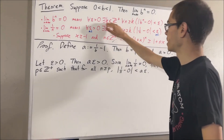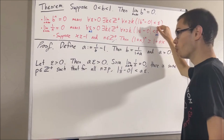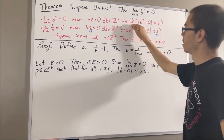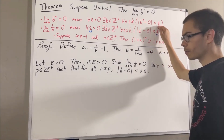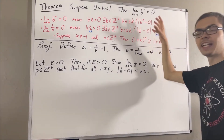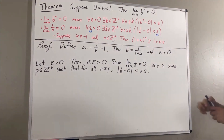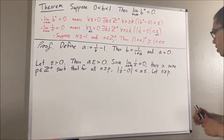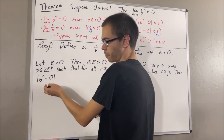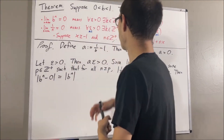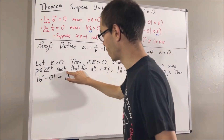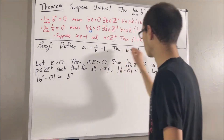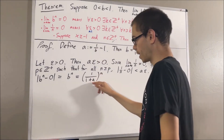Our whole goal has been to find a positive integer which makes this statement turn out true. We're going to show that p will work. That is, we're going to show for all positive integers n greater than or equal to p, the absolute value of b to the n minus 0 is less than epsilon. So give me an arbitrary positive integer n greater than or equal to p. We want to show that the absolute value of b to the power of n minus 0 is less than epsilon. The left-hand side equals the absolute value of b to the power of n, and since b is positive, b to the power of n is positive, so we don't need the absolute values. Then, since b equals 1 over 1 plus a, substituting gives us 1 over 1 plus a to the power of n.